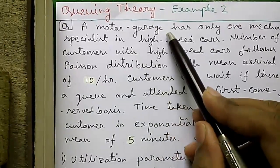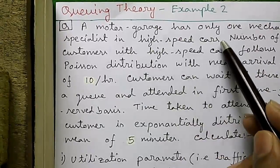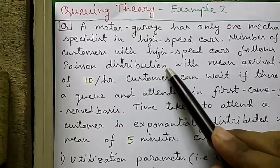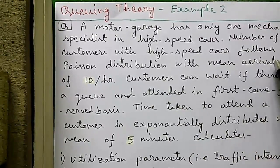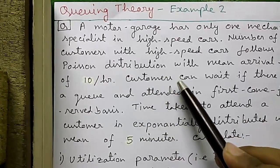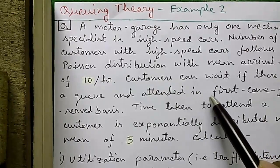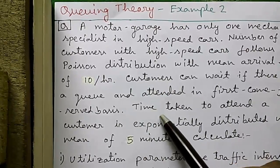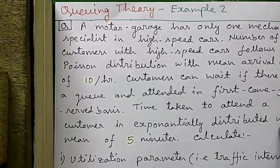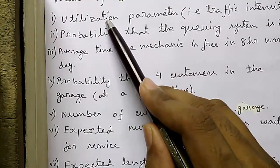Our question is: a motor garage has only one mechanic specialist in high-speed cars. The number of customers with high-speed cars follows Poisson distribution with mean arrival of 10 customers per hour. Customers can wait if there is a queue and attend it in first-come first-served basis and the time taken to attend a customer is exponentially distributed with a mean of 5 minutes per customer.